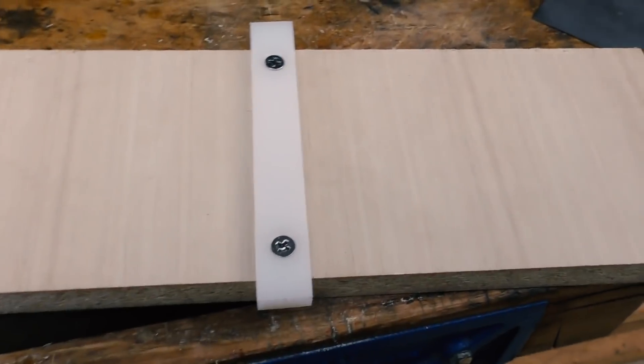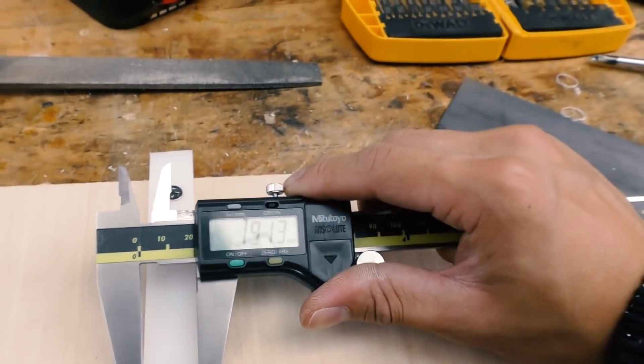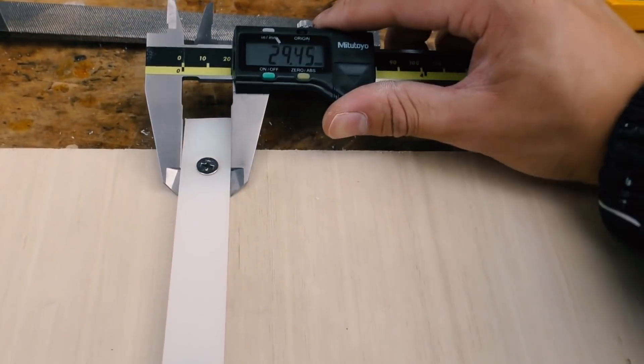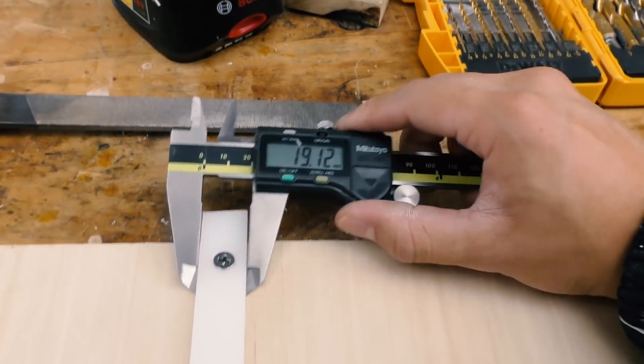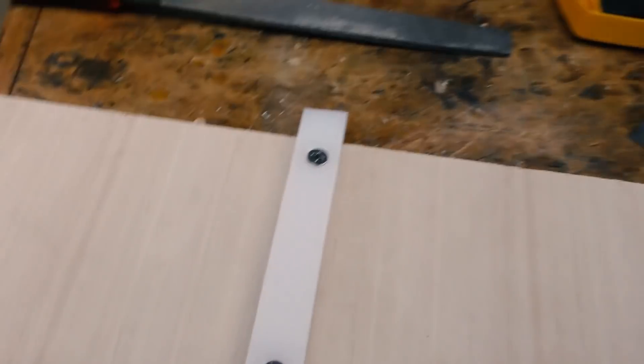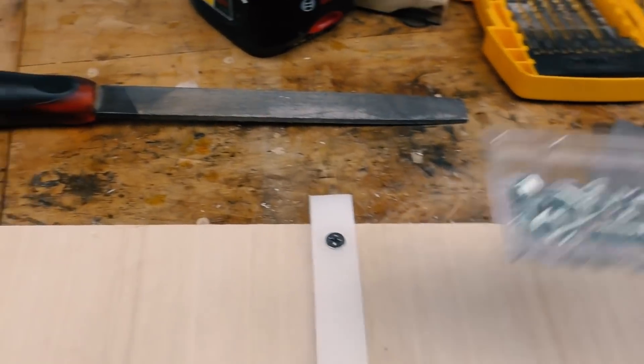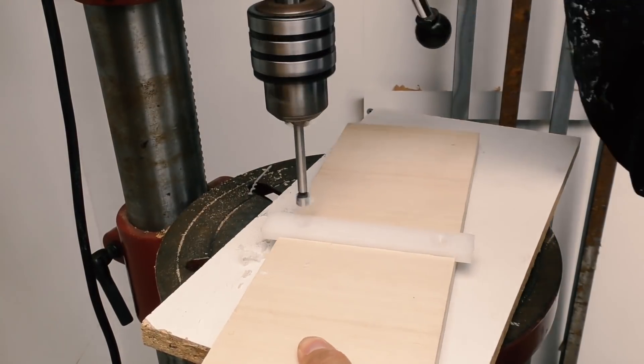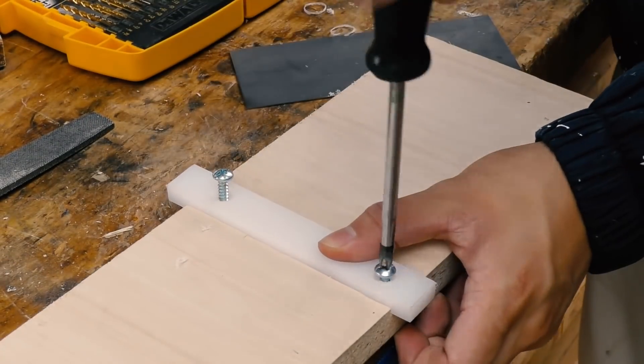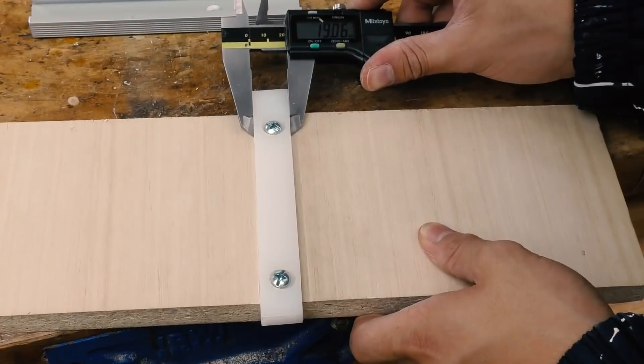Well, we've got a problem here. These countersink screws seem to expand the plastic quite a bit. So I'm going to try and change out to these pin head screws, and hopefully that will solve the problem. It's a bit better.